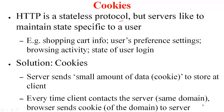A cookie is associated with a domain, for example amazon.com. So whenever the client contacts the amazon.com servers, it is going to pass on all the cookies related to this particular domain.